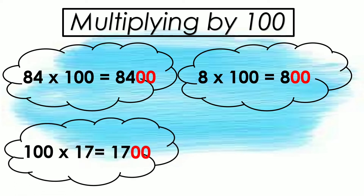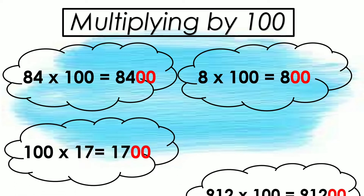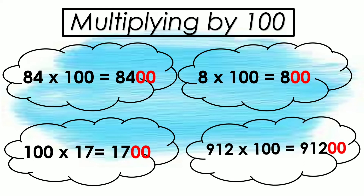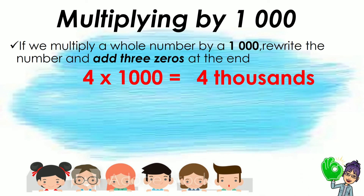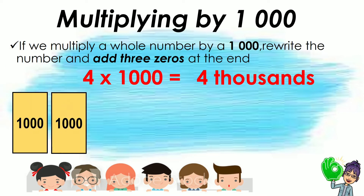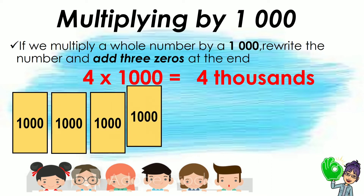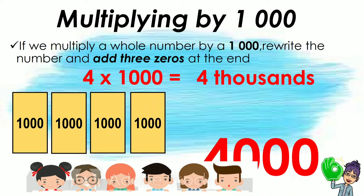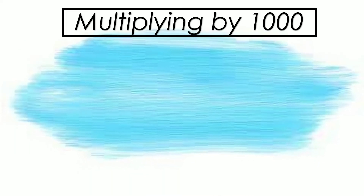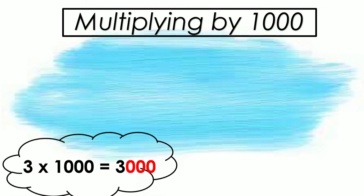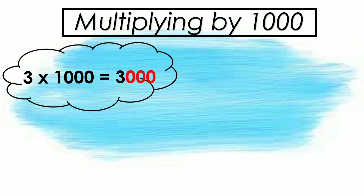Now let's have multiplying numbers by 1,000. For example, 4 times 1,000 is equivalent to 4,000. As you can see in our illustration, we have 4 groups of 1,000. So 4 times 1,000 equals 4,000, wherein you can see 3 zeros. In multiplying numbers by 1,000, simply copy the number and add 3 zeros at the end, like what is shown in our examples.